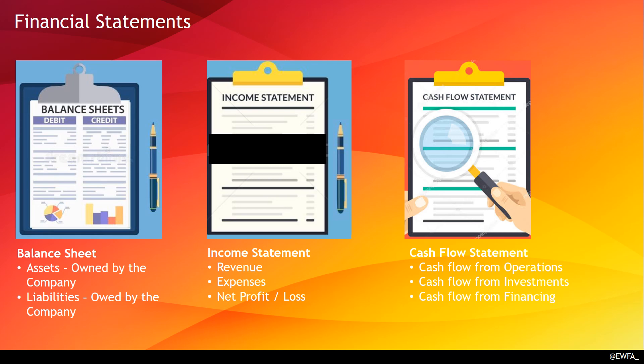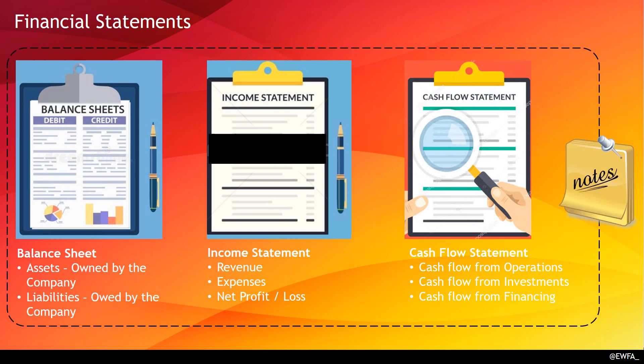The fourth component is not a financial statement itself but the notes accompanying each of the components in these three financial statements — called notes to financial statements. For example, if the balance sheet has a component called current assets, there will be a note with a detailed schedule of what all current assets the company holds. These notes are very valuable — sometimes even more valuable than the actual financial statements — and investors must ensure they go through the accompanying notes as well.